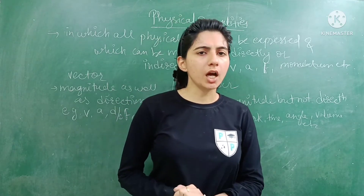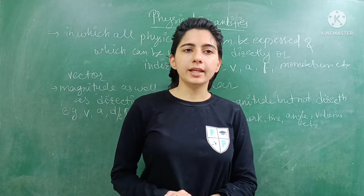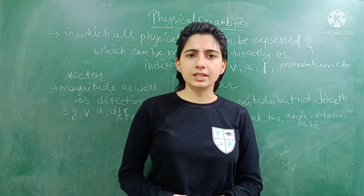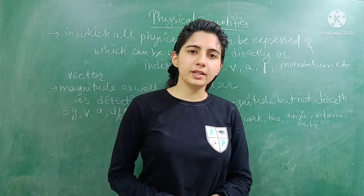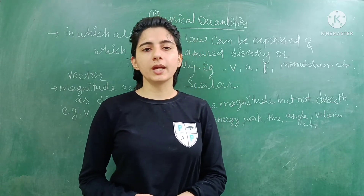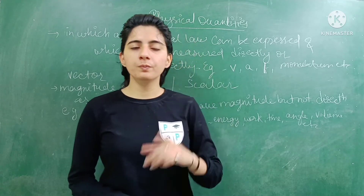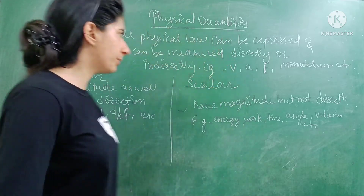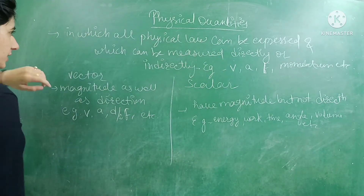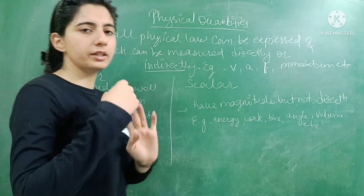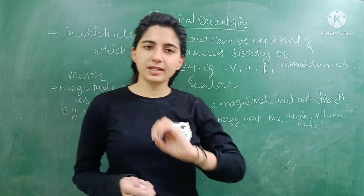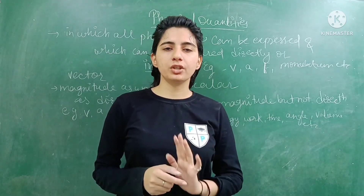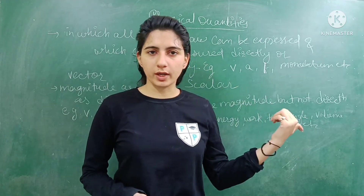Now, you can't measure everything. Like emotions, feelings, love, hatred — you can't measure all these things. So, physical quantities in physics terms are those quantities in which all physical laws can be expressed and which can be measured directly or indirectly. We call them physical quantities.